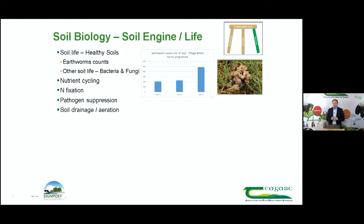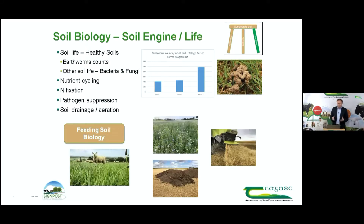Soil biology is very important — it's the engine, the life of our soils, and a key indicator of soil health. A simple indicator is earthworm numbers. Recent work done on the Better Farms programme with three farms showed that farms using little organic manures had around 200 earthworms per cubic metre, while a third farm with a long history of using organic manures had 500 per cubic metre — and you could see the castings on the ground and the fields were drier. The biology is critical for nutrient cycling, nitrogen fixation, pathogen suppression, and soil drainage and aeration. On grassland farms, farmyard manure and cattle slurry targeted to areas with slight compaction feeds the biology; on tillage farms, cover crops, chopped straw, and organic manures serve as a food source for soil biology.